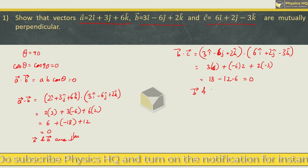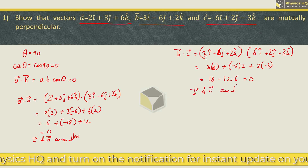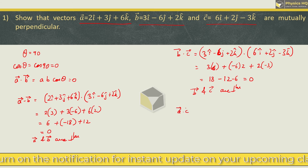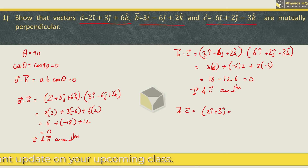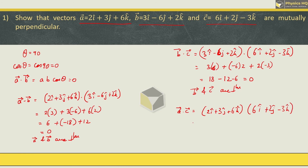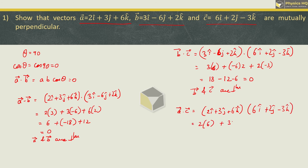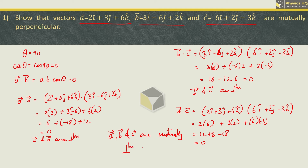So we can say vector b and vector c are perpendicular to each other. Lastly let us check a and c. a is given as 2i plus 3j plus 6k, and vector c is 6i plus 2j minus 3k. So we get 2 into 6 plus 3 into 2 plus 6 into minus 3, which is 12 plus 6 minus 18, again 0. So even a and c are perpendicular to each other. Therefore vectors a, b and c are mutually perpendicular to each other.